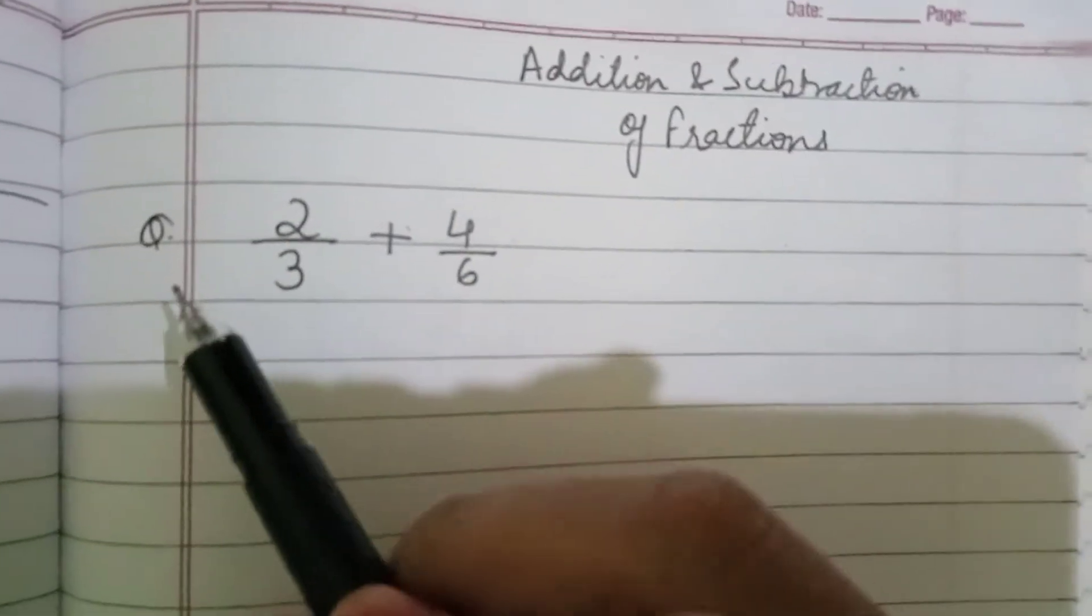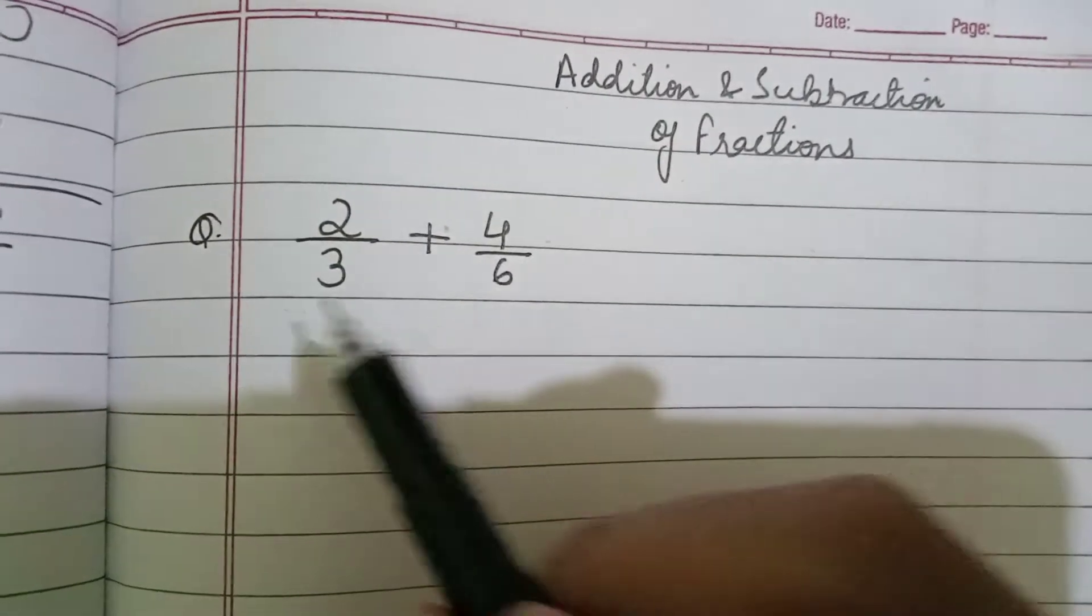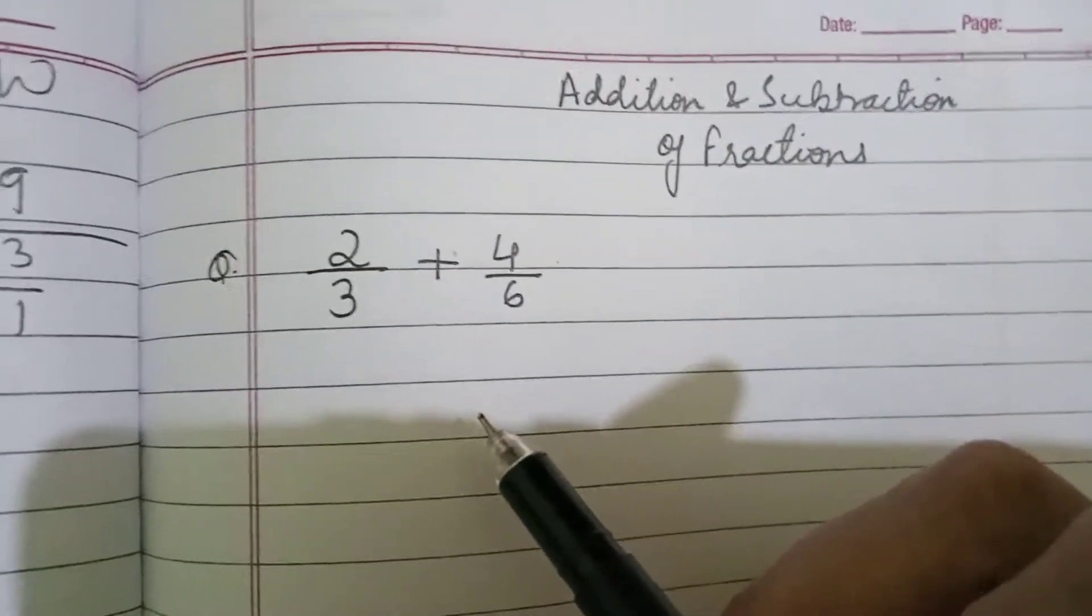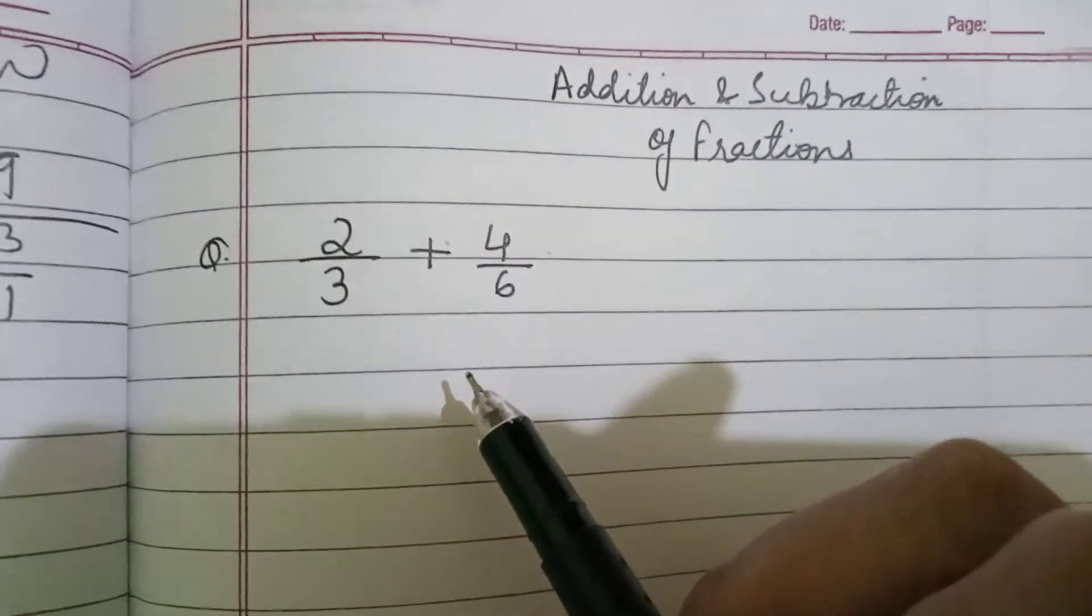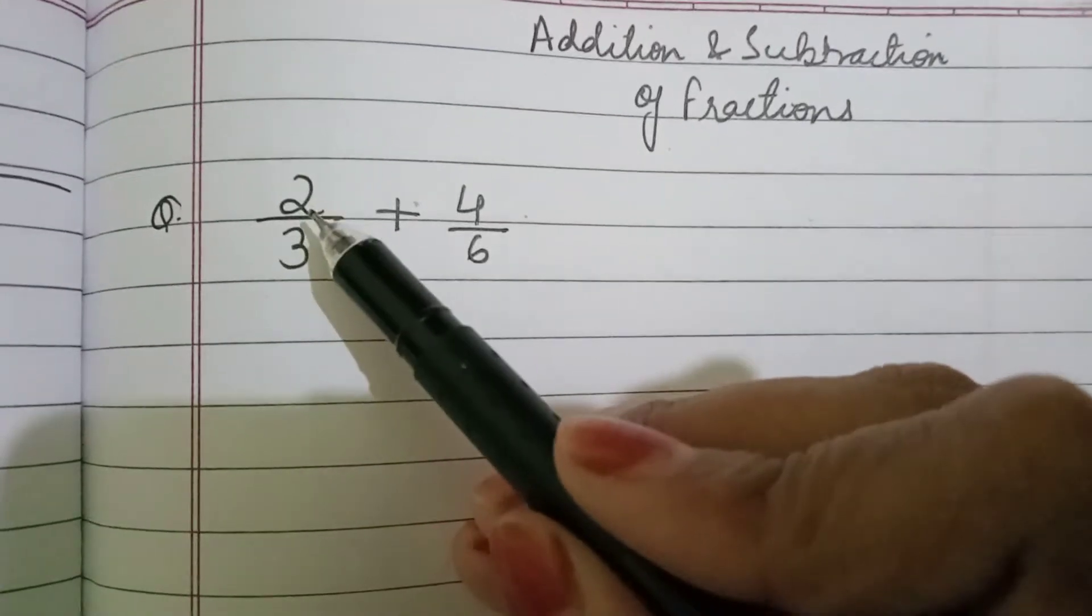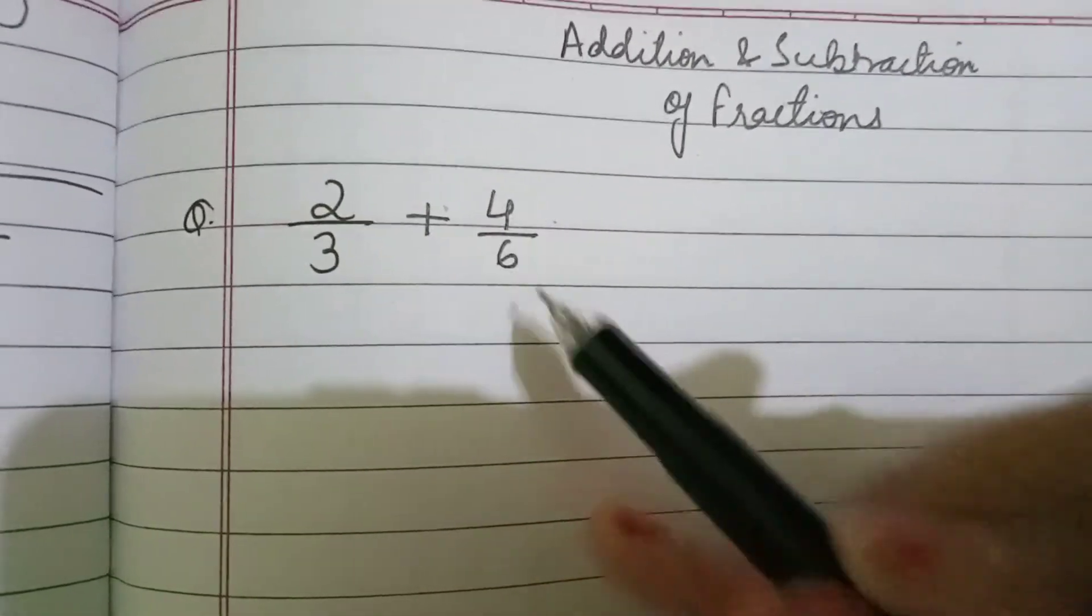First we will study addition of fractions and then we will see how to solve subtraction of fractions. So this is the question: 2 upon 3 plus 4 upon 6.